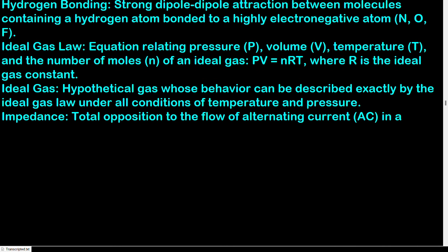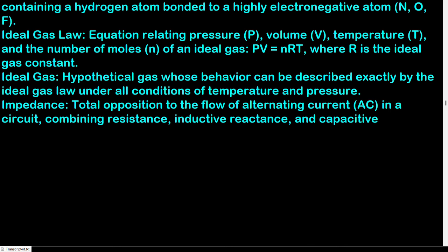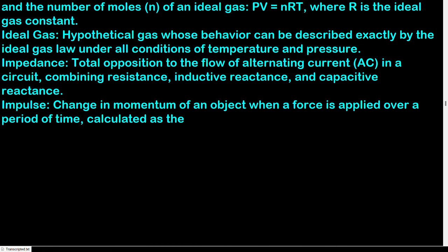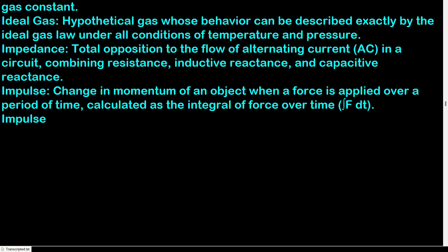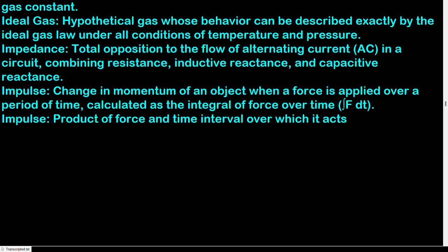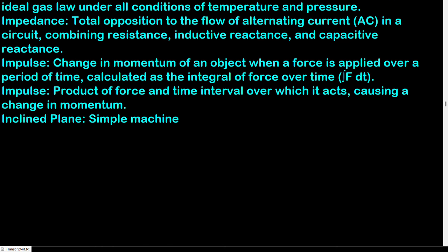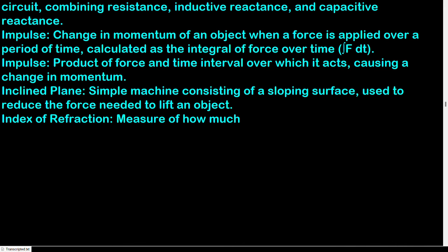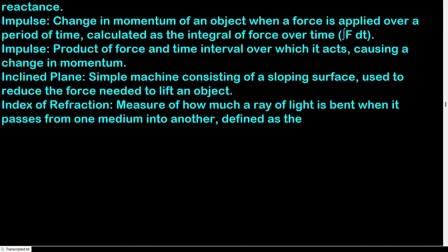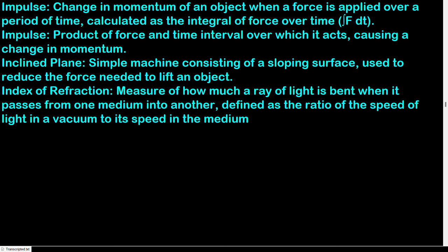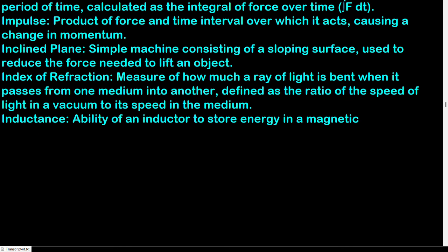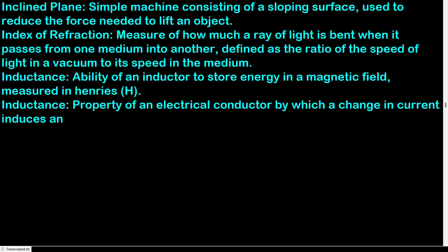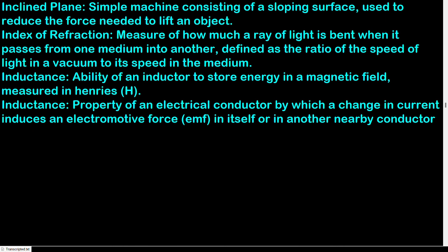Ideal gas: hypothetical gas whose behavior can be described exactly by the ideal gas law under all conditions. Impedance: total opposition to the flow of alternating current in a circuit, combining resistance, inductive reactance, and capacitive reactance. Impulse: change in momentum of an object when a force is applied over a period of time; calculated as the integral of force over time. Inclined plane: simple machine consisting of a sloping surface used to reduce the force needed to lift an object. Index of refraction: ratio of the speed of light in a vacuum to its speed in a medium. Inductance: ability of an inductor to store energy in a magnetic field, measured in henries.